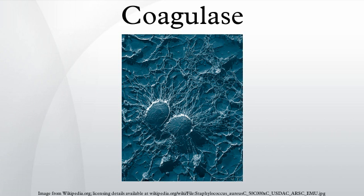List of coagulase negative Staphylococci of clinical significance: S. saprophyticus, S. cohnii subsp. coagulase, S. cohnii subsp. urealyticum, S. capitis subsp. capitis, S. warneri, S. hominis, S. epidermidis, S. caprae, and S. lugdunensis.